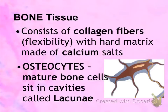The first tissue we're going to talk about is bone tissue. It does contain collagen fibers, which gives it flexibility. And unlike all the other connective tissue, bone tissue has a hard matrix made up of calcium salts, which gives it its rigidity and strength. These bone cells are called osteocytes, and they are located in little cavities called lacunae.